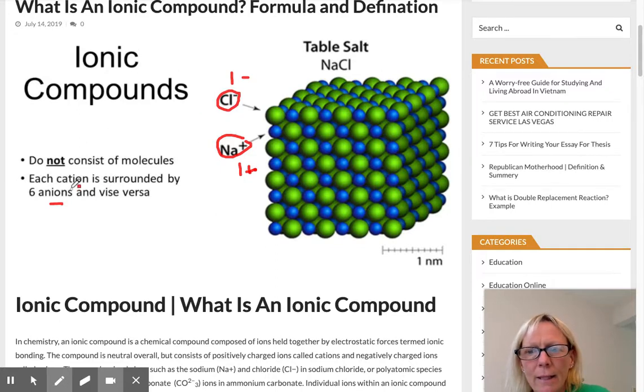Cations are the positively charged ions. We know that these are transferring their electrons, so transferring, and then they form a bond like the table salt that we put on our food.